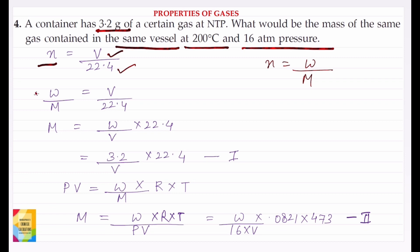So weight divided by molecular weight is equal to V divided by 22.4. From this, value of M will be W divided by V times 22.4.